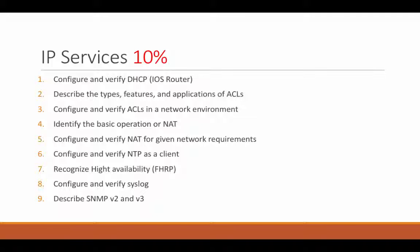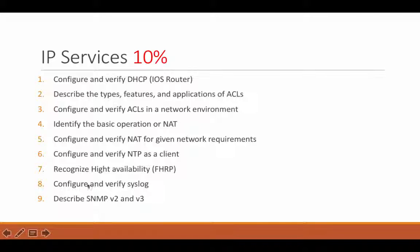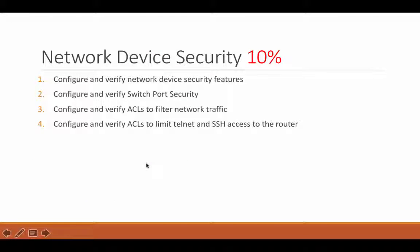IP services is 10%. We'll configure and verify DHCP on an IOS router, and describe the types, features, and applications of ACLs. One thing to mention — we won't be looking at switches with routing capabilities in this context; we will look at layer 3 switches but not in that specific area. We'll configure and verify ACLs on a network environment, identify basic operation of NAT, configure and verify NAT for given network requirements, the same for NTP as a client, recognize high availability FHRP, configure and verify Syslog, and describe SNMP V2 and V3 and the differences between them.